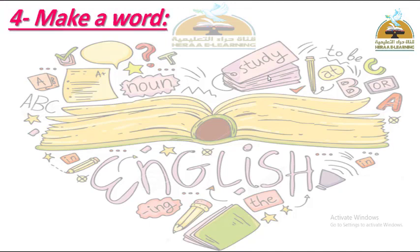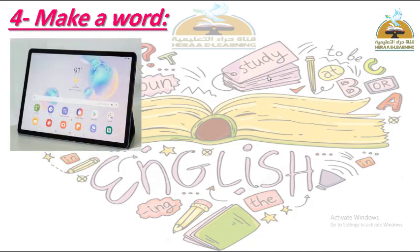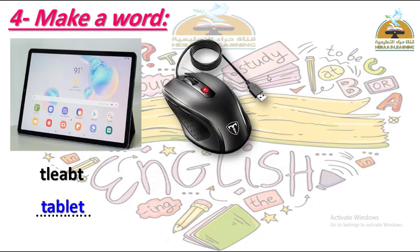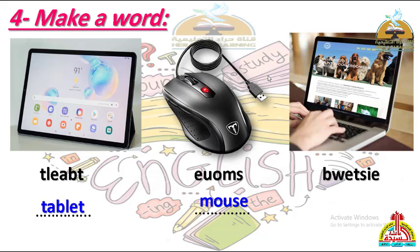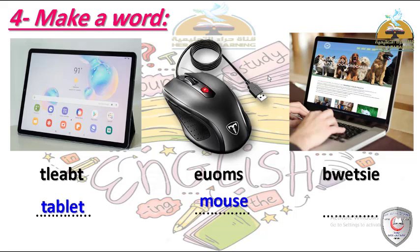تمرين make a word - كوّن الكلمة من الحروف المبعثرة بمساعدة الصورة. الصورة الأولى: tablet - T-A-B-L-E-T. الصورة التانية: الفقرة - mouse - M-O-U-S-E. الصورة التالتة: لابتوب فاتح عليه موقع إلكتروني - website - W-E-B-S-I-T-E.